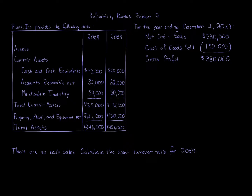We're looking at the asset turnover ratio as part of profitability analysis. Profitability analysis evaluates the ability of a company to generate future earnings. This ability depends on the relationship between the company's operating results and the assets available for use in its operations — that is, the relationship between income statement items and balance sheet items.